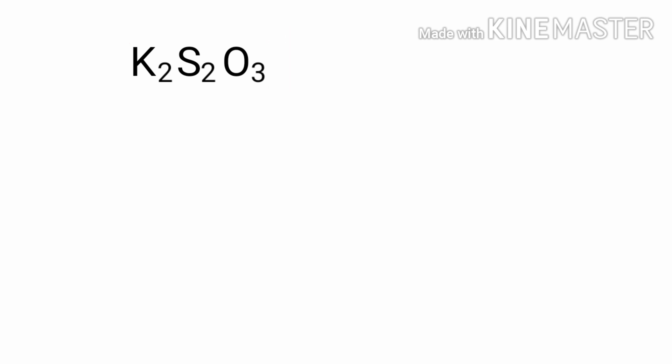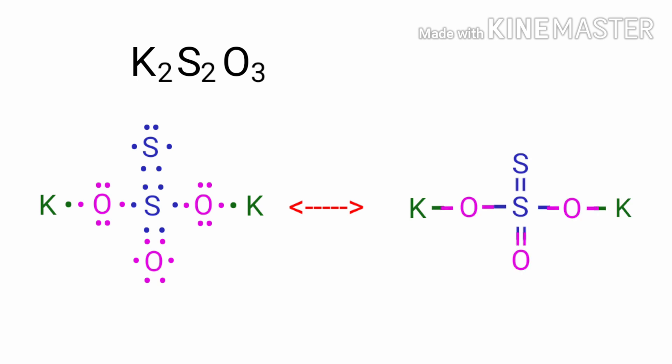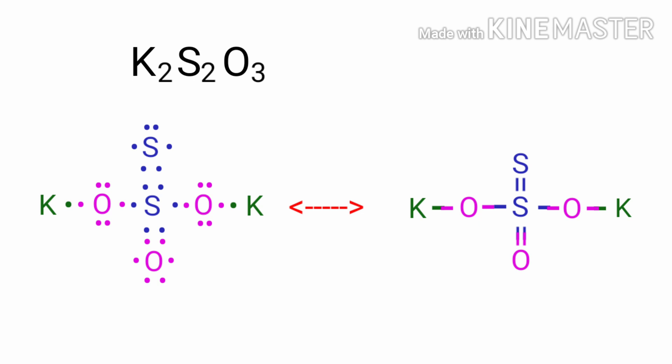Now we can draw the structure of potassium thiosulphate. Sulphur has 6 valence electrons, oxygen has 6 valence electrons, and potassium has 1 valence electron. In this formula, 2 potassium atoms, 2 sulphur atoms, and 3 oxygen atoms are present.